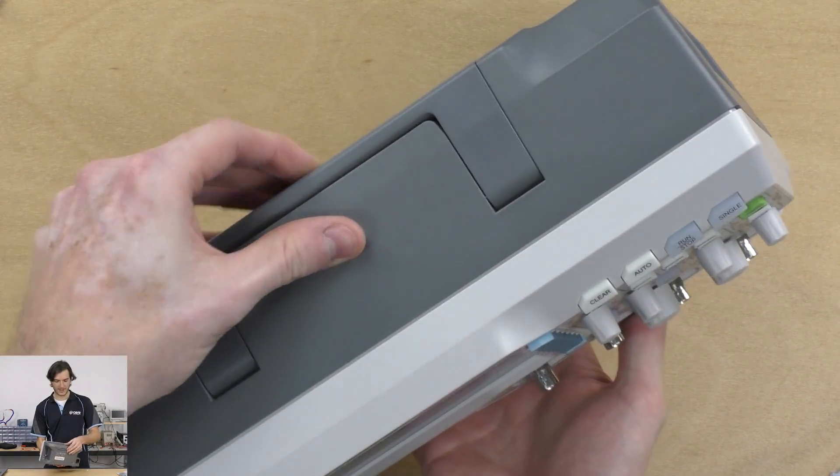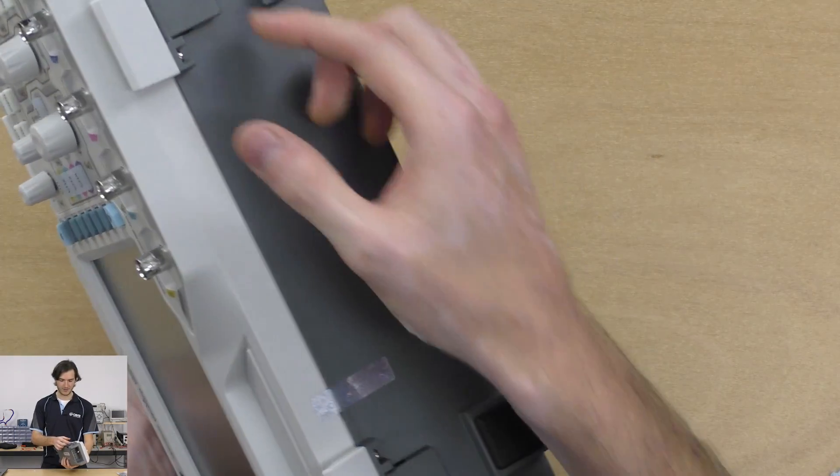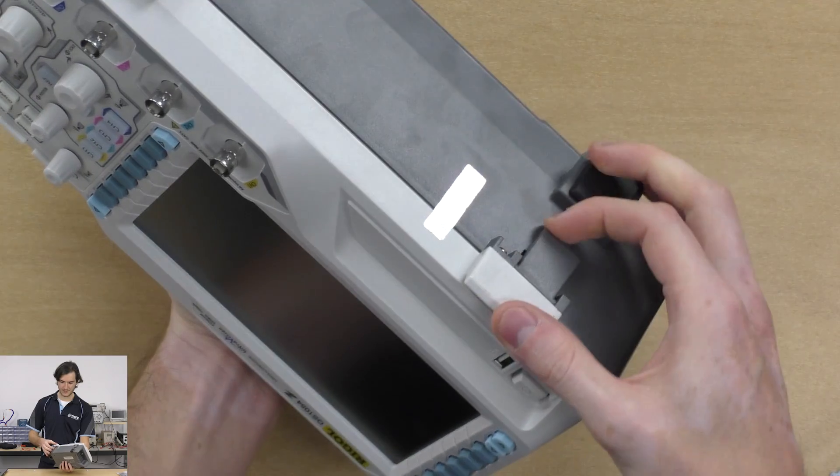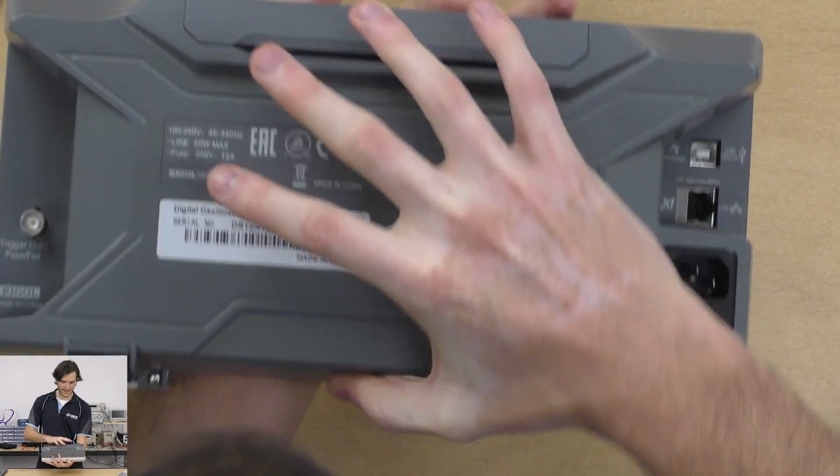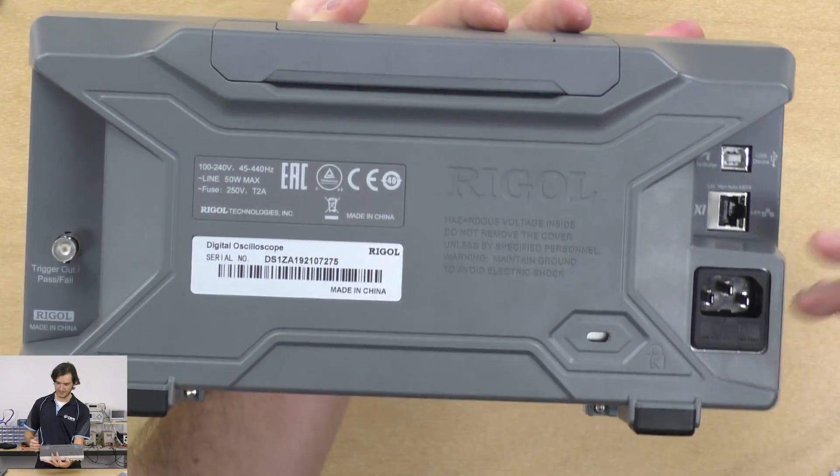On the top we have the carrying handle, on the bottom some fold-out footies to lift it off the bench a bit, and on the back we have the usual power input.